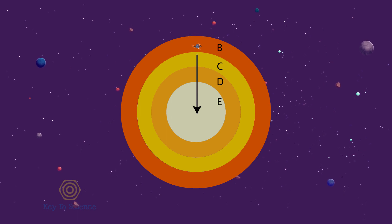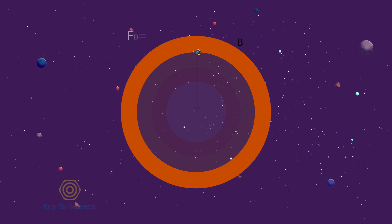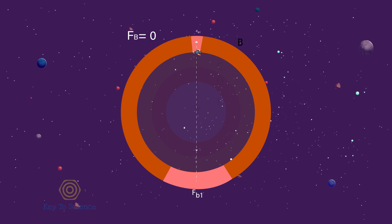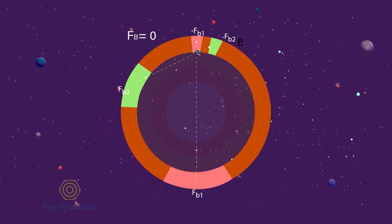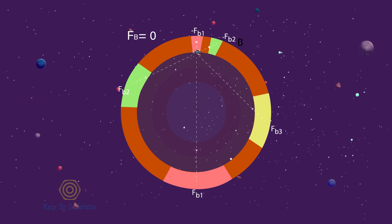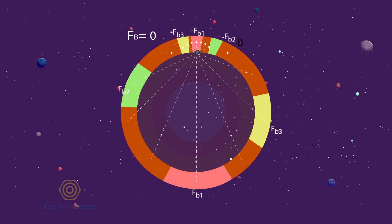Now, we'll reach the surface of shell C after passing shell B behind. In this case, the resultant force on us by the shells A and B will be zero. F-B-1 will be canceled out by minus F-B-1. F-B-2 will be canceled out by minus F-B-2. F-B-3 will be canceled out by minus F-B-3, and so on.